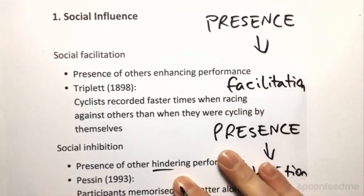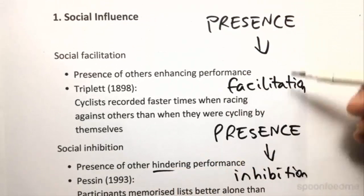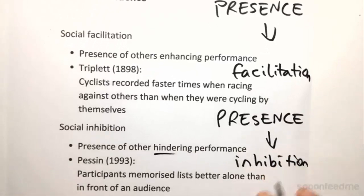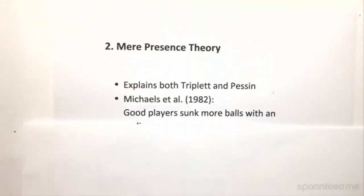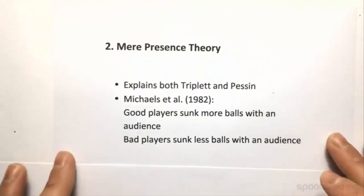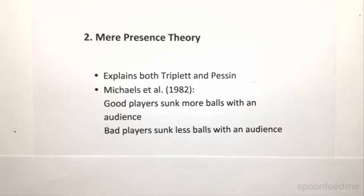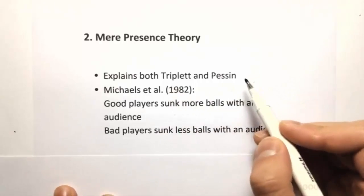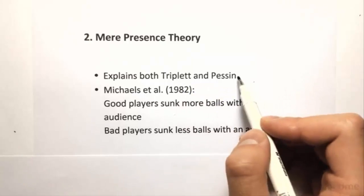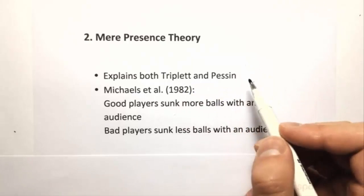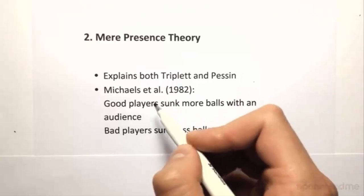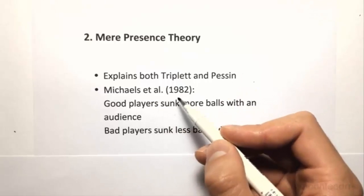So we suddenly have two findings that are in conflict with each other. Until 1965, when Zajonc came up with the mere presence theory — the first of the social facilitation theories. He explained both the Triplett study and the Pessin study: both social facilitation and inhibition as a result of the presence of others. A good way to illustrate it is Michaels et al. in 1982.